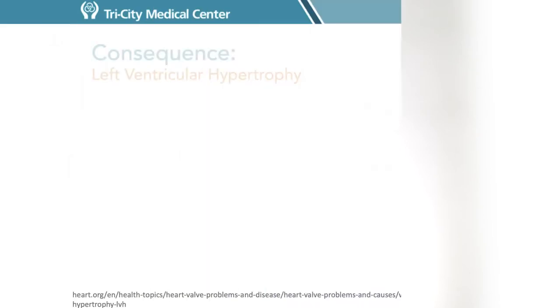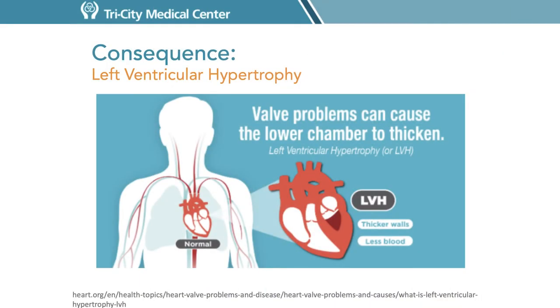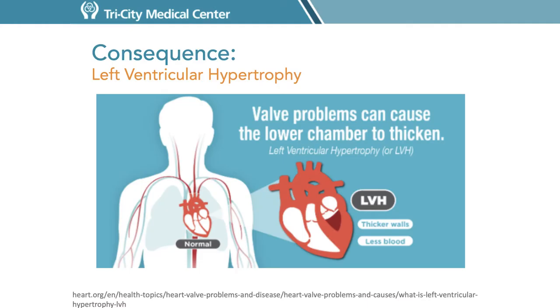One of the potential consequences of aortic stenosis is left ventricular hypertrophy. Over time, the walls of the left ventricle begin to labor to pump blood through the narrow valve opening into the aorta. Similar to how a bodybuilder's muscles enlarge as they exercise, the heart muscle begins to thicken to compensate for the increased workload. The thickened wall starts to take up more space inside the ventricle, allowing less room for adequate blood supply to the body. As it progresses, this may lead to heart failure and other cardiac problems. Appropriate treatment can reverse or slow down this progression.